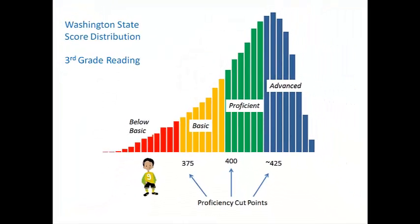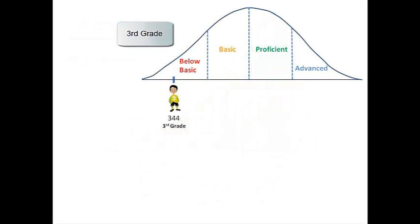Let's start by first examining this test score distribution for all students across the state in Anthony's cohort. We can see there is a spread of scores from the below basic range up to advanced. Anthony's score of 344 is at the lower end of the distribution in below basic.